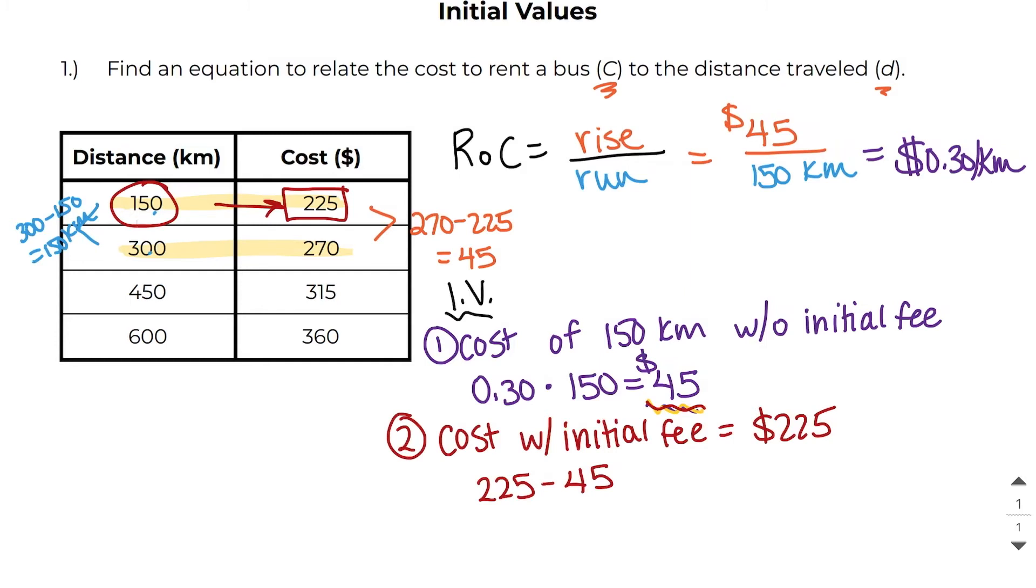Well if the cost with the initial fee is 225 and it costs 45 dollars for those 150 kilometers without the initial fee, we subtract those two values and we end up getting $180. So our initial fee is $180. So now we have our two pieces of information that we need. We know our rate of change is 30 cents per kilometer and our initial value is $180.